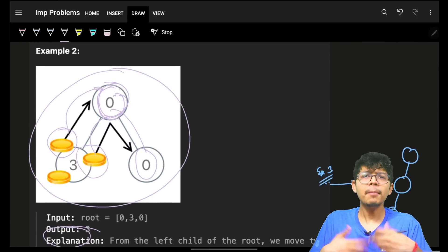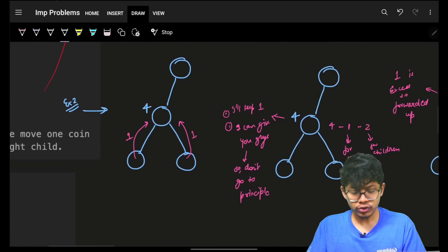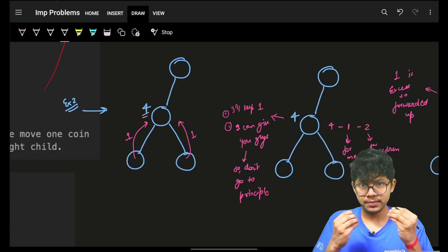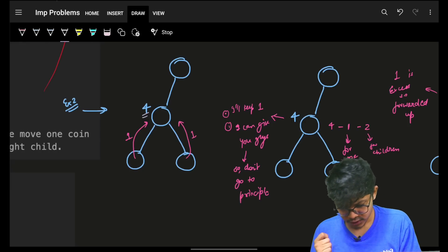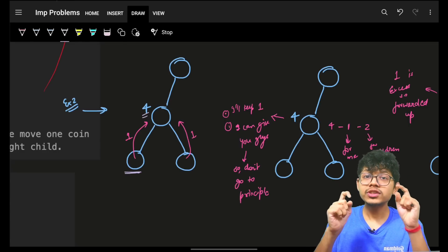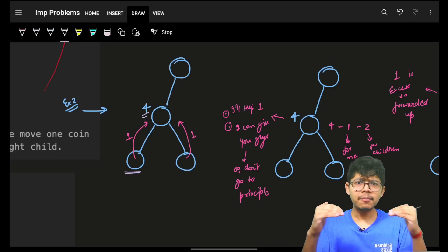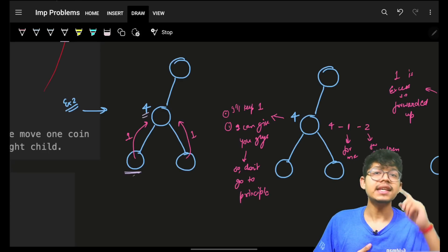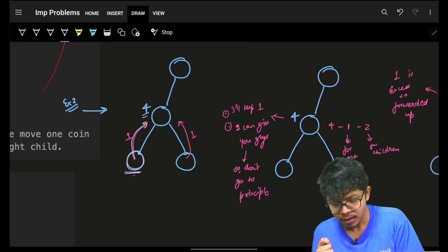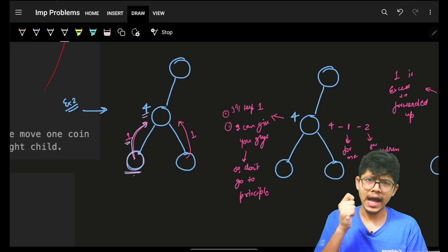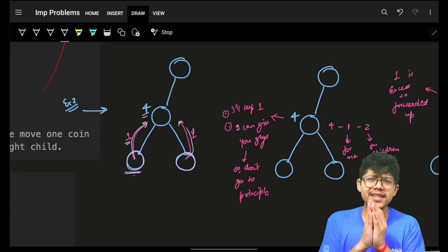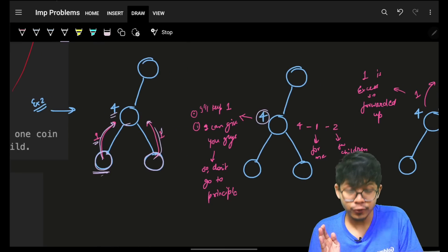Let me extend to a better example. Imagine you have four coins. Ask yourself the demand of every node. Since only two consecutive nodes can interact and in a tree we have a parent-child relationship, a child can only ask its immediate parent. This child node asks its parent: 'Can you please give me one coin?' The same way the other child says: 'Can you please give me one coin?'